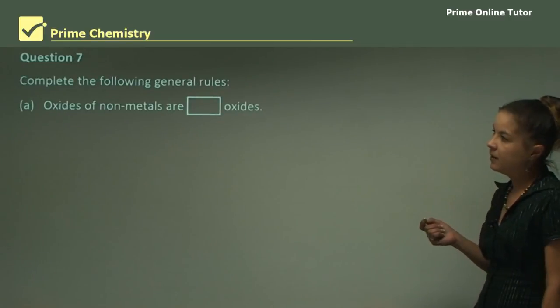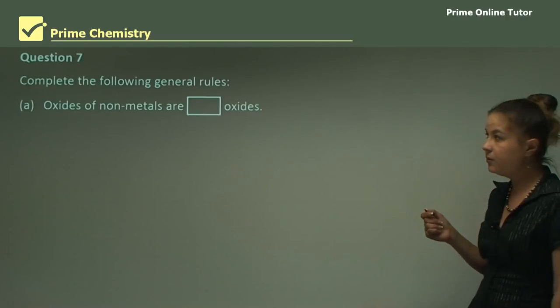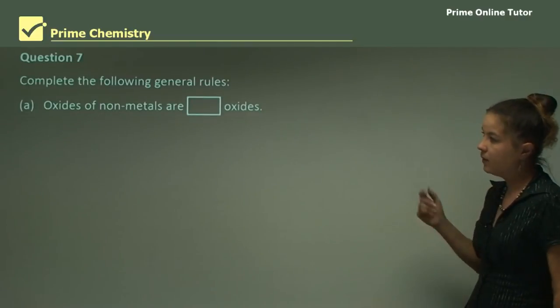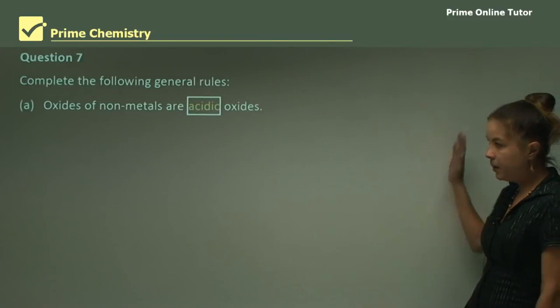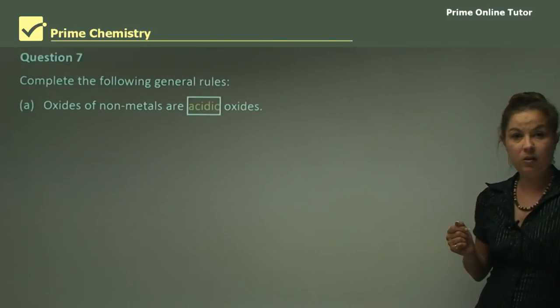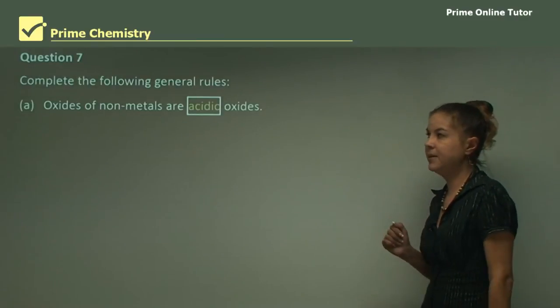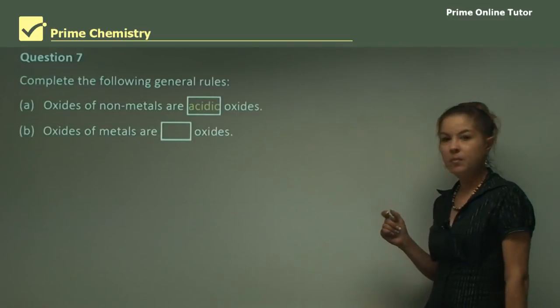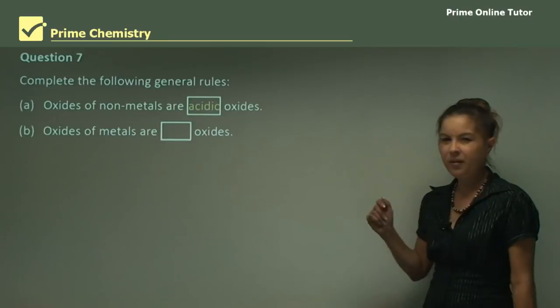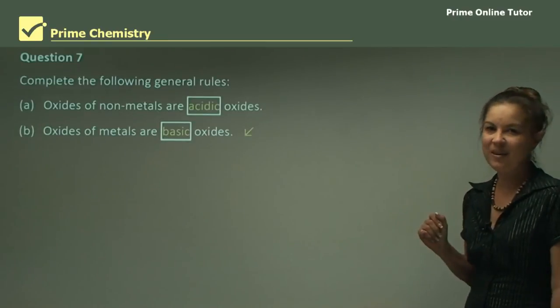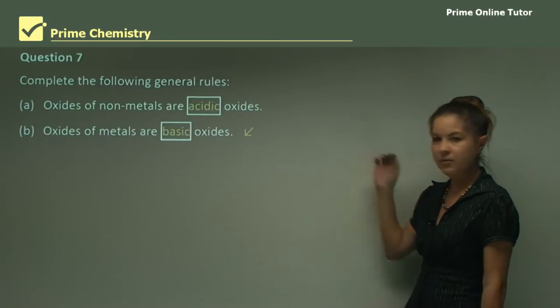Question 7: Complete the following general rules. Oxides of non-metals, which are on the right hand side of the periodic table, are what oxides? Do you remember? They're acidic oxides, the majority. Some are neutral, but the general rule is they're acidic. Part B: Oxides of metals are, and you have a clue from part A, they're basic oxides. Those are your general rules about non-metals and metals.